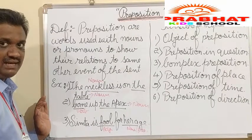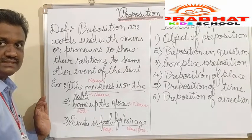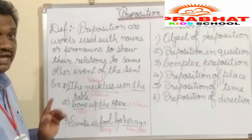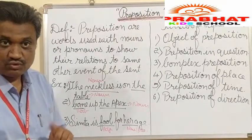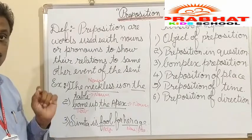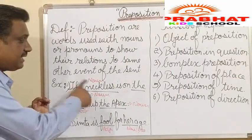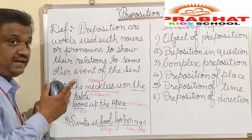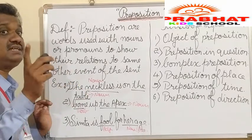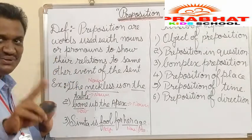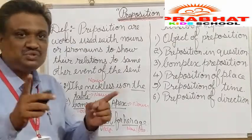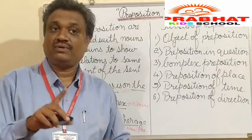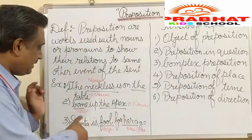Let me explain with an example. 'The necklace is on the table.' Here, 'the necklace' is a noun, 'the table' is also a noun, and 'on' comes in between the two nouns. So the preposition shows the relationship between a noun and another noun.